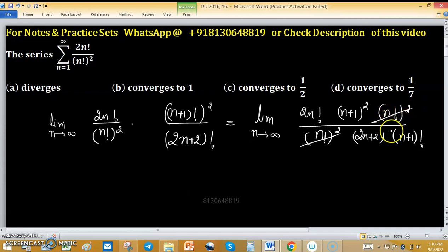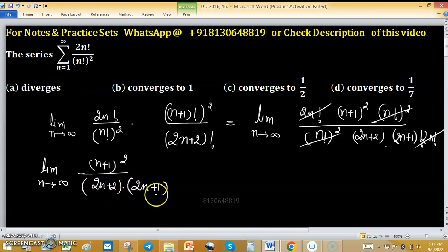Now take 2n factorial. The 2n factorial cancels out. We have the remaining expression: limit n tends to infinity (n+1) whole square upon (2n+2) into (2n+1).